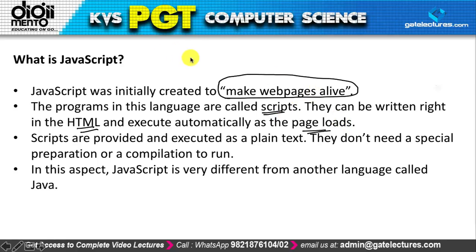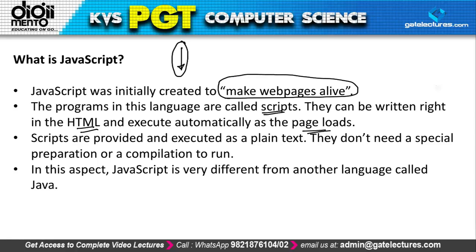Why is JavaScript not a fully independent programming language? Most programming languages are completely independent and don't need a carrier. JavaScript, however, needs a carrier — it works within a tagging language or other programming language. Scripts are provided and executed as plain text and don't need special preparation or compilation to run.